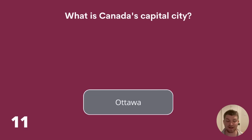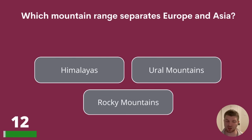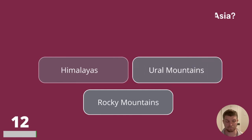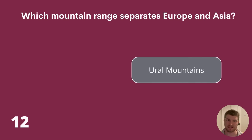The answer to question 11 is Ottawa. Question 12. Which mountain range separates Europe and Asia? Himalayas, Ural Mountains or Rocky Mountains? The answer is the Ural Mountains.